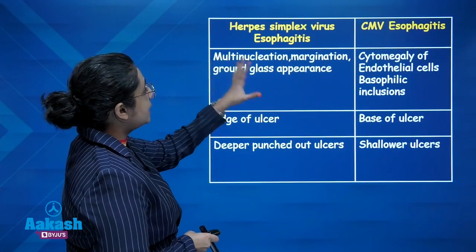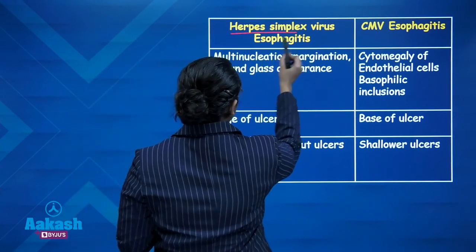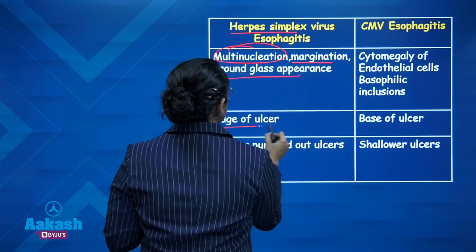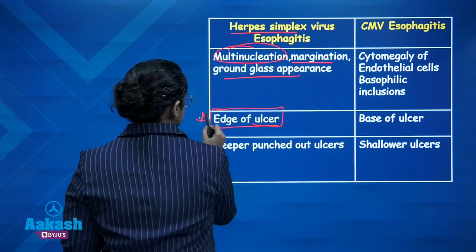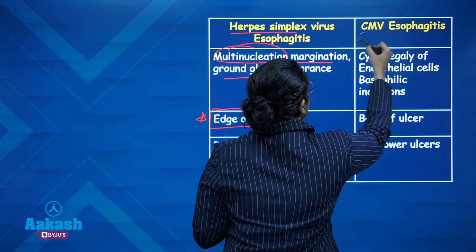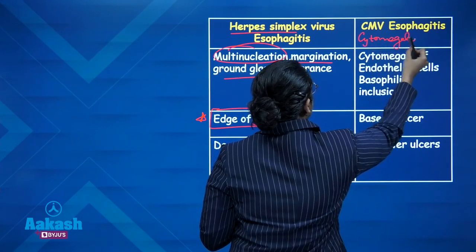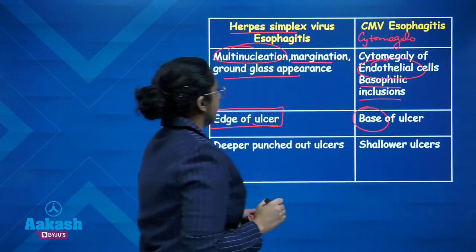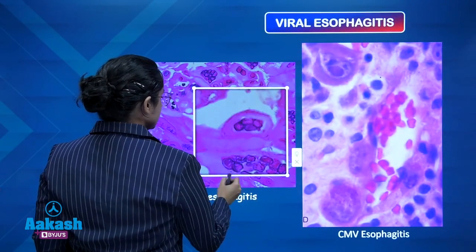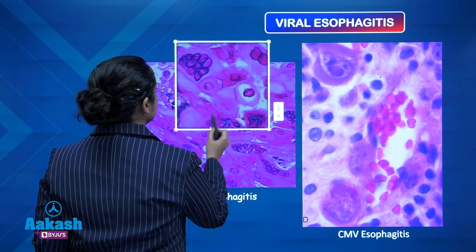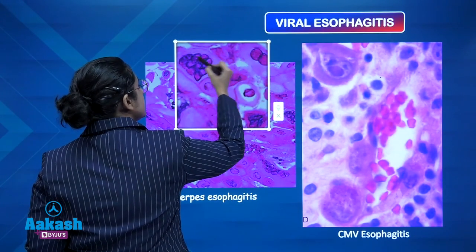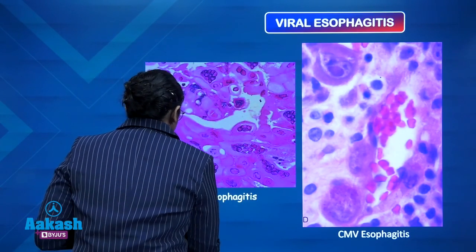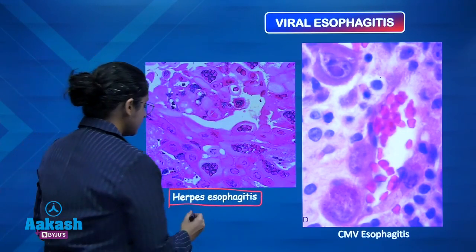Viral esophagitis can be due to herpes simplex virus, characterized by multinucleated cells, margination of chromatin, and ground glass appearance. The common site for taking a biopsy to diagnose herpes simplex virus is the edge of the ulcer. Margination of chromatin means thickening of chromatin at the periphery along with ground glass appearance at the centre. These three features help diagnose HSV esophagitis.